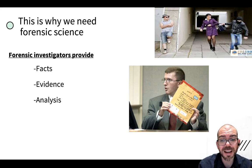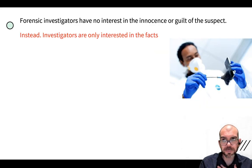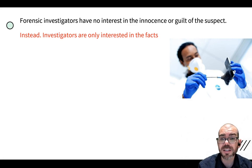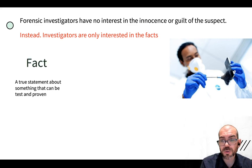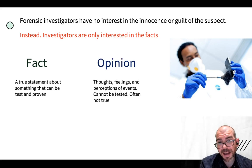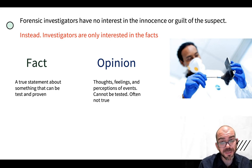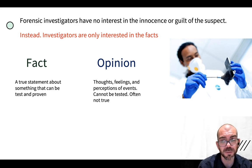This is why we need forensic science. Forensic investigators are going to provide facts, evidence analysis — all of the things we need to conclusively determine what happened with a historical event. Forensic investigators have no interest at all in who is innocent or who is guilty. We all love those online crime shows — they're very entertaining — but that is not the job of a forensics investigator. We are going in from a scientific standpoint and just saying: what are the facts, what did we discover, what probably happened here? A fact is a true statement that can be tested and proven — that is dramatically different from opinion, which is someone's thoughts, feelings, or perceptions. We can't test those and they're often not true. Sometimes forensics investigators are actually called into the courtroom to help the jury decide the difference between what is a fact and what is an opinion.